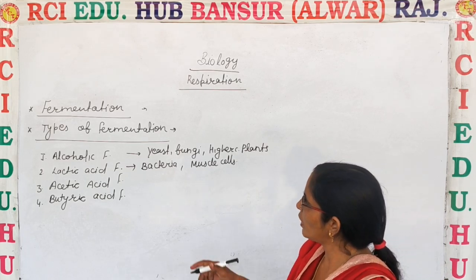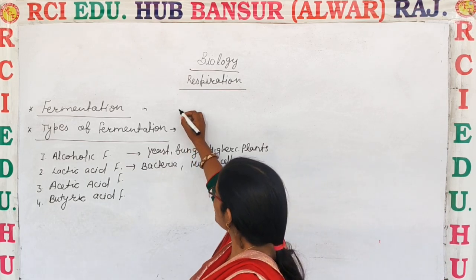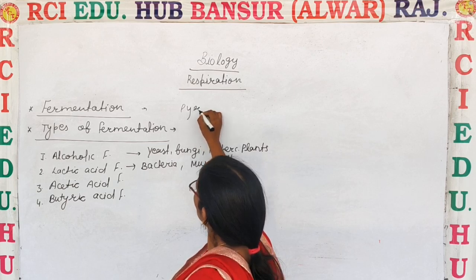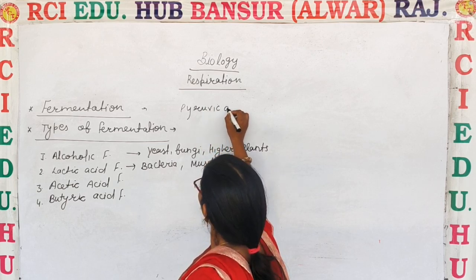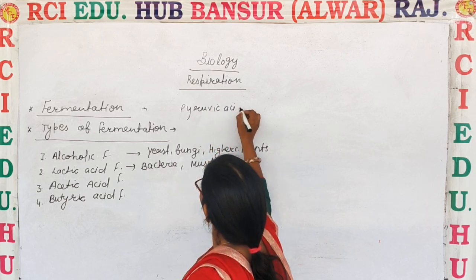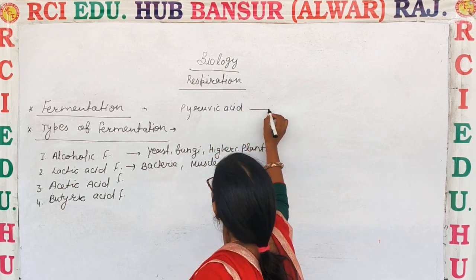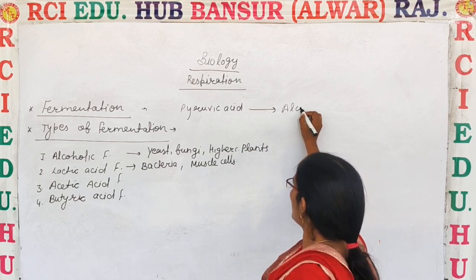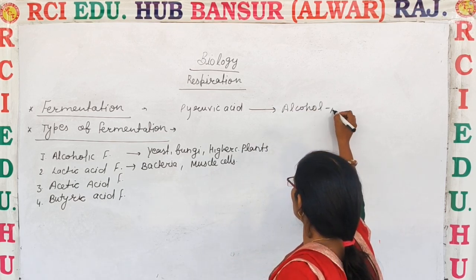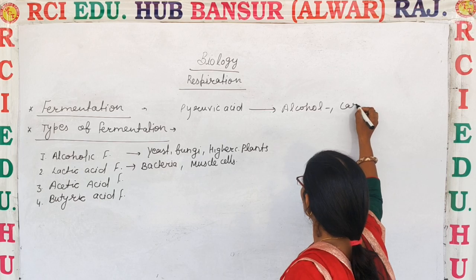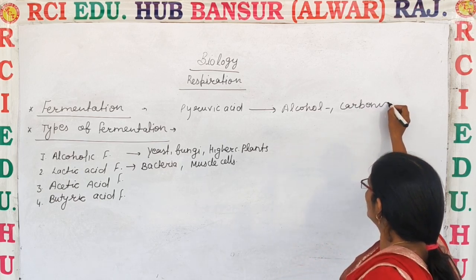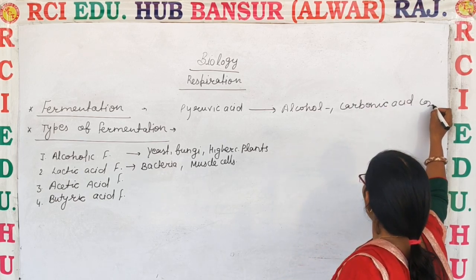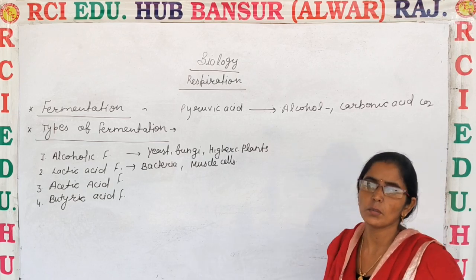Fermentation is when pyruvic acid undergoes partial oxidation — pyruvic acid is fermented into alcohol or carbonic acid with release of CO2. That is known as fermentation.